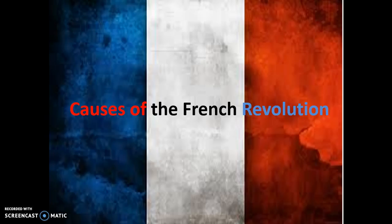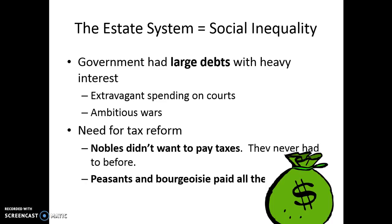Let's talk about the causes of the French Revolution. The estate system is a major cause because it symbolizes social inequality. The government had very large debts with heavy interest to pay, due to the extravagant spending of previous kings on their courts, palaces, and lavish lifestyles. They also undertook ambitious wars — wars between France and Great Britain — and helped fund the American Revolution with money and supplies. The country needed tax reform, but the nobility didn't want to pay taxes and resisted any reform, while the peasants and the bourgeoisie — the middle class — paid everything.